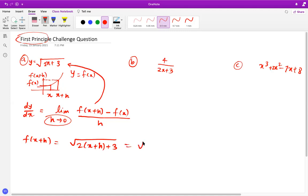That's actually square root of 2x plus 2h plus 3. Now, why this question becomes a little challenging is because when you substitute out here, let's see what we get.